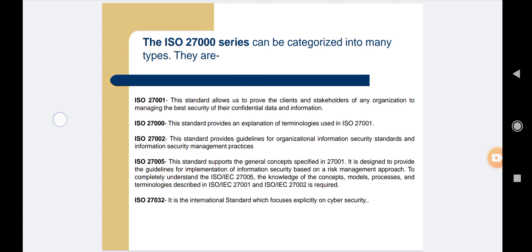The second is ISO 27000, which provides an explanation of terminologies used in ISO 27001. The third is the ISO 27002 standard, which provides guidelines for organizational information security standards and information security management practices. It includes the selection, implementation, operating, and management of controls, taking into consideration the organization's information security risk environment.